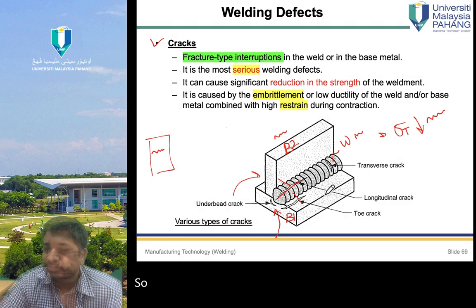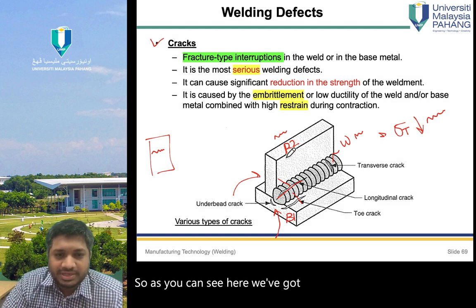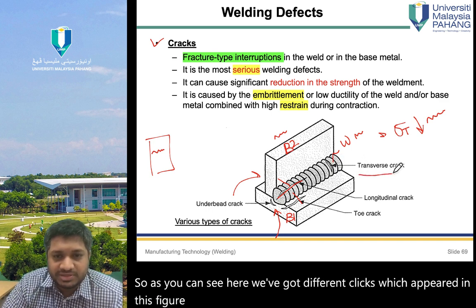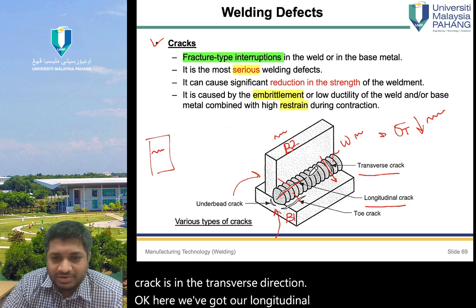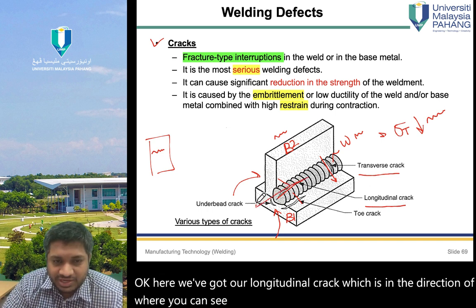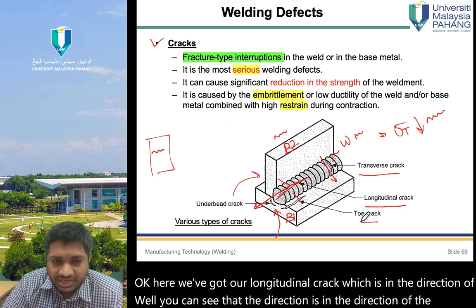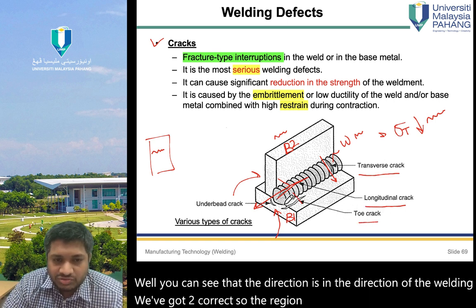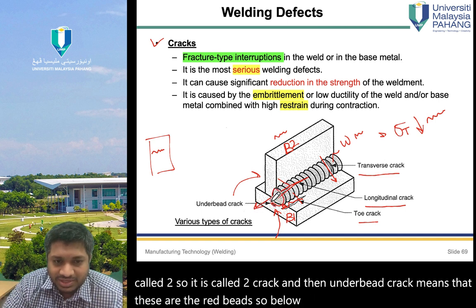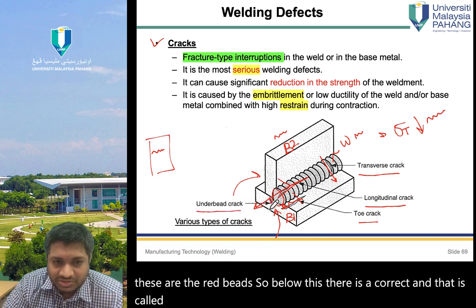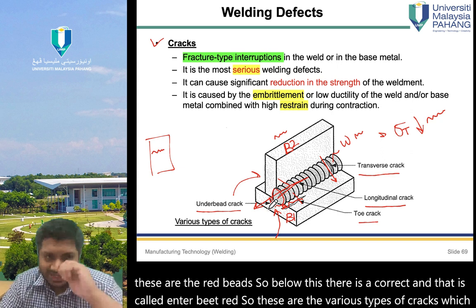Different types of cracks include: a transverse crack in the transverse direction, a longitudinal crack in the direction of the weld, a toe crack at the region where the weld attaches to the base metal, and an under-bead crack located below the weld beads.